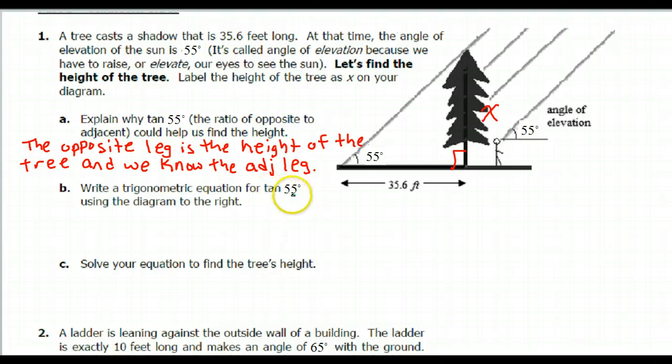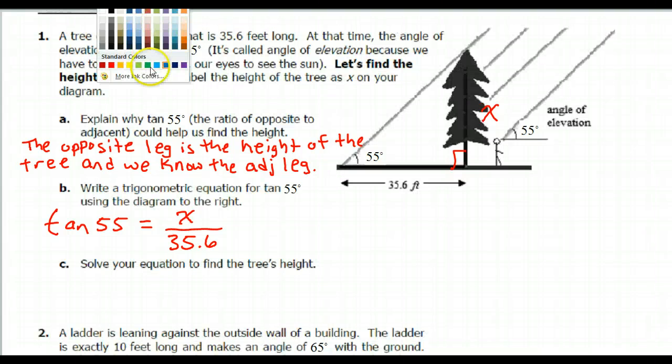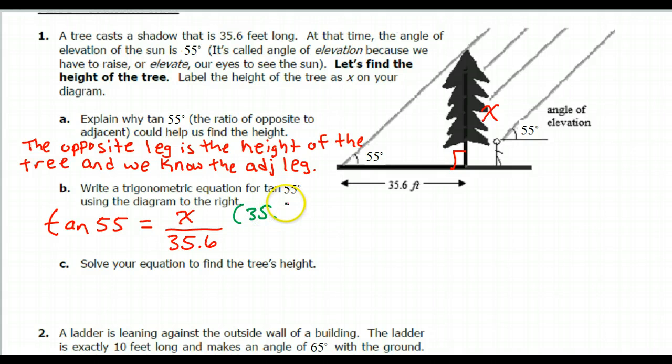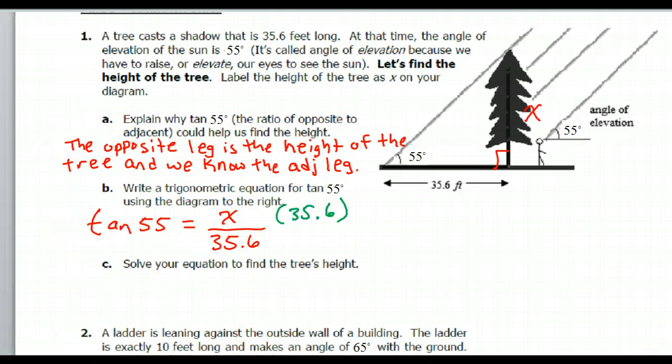Now write a trig equation for tangent of 55 using the diagram. So tangent of 55 degrees is going to equal opposite over adjacent, so x over 35.6. Now solve your equation to find the tree's height. I'm going to multiply both sides by 35.6. That way these 35's will cancel each other out. So 35.6 tangent 55 is going to equal x, which is going to equal 50.8 feet.